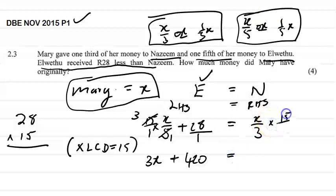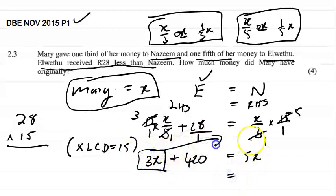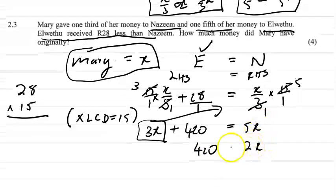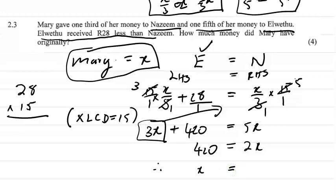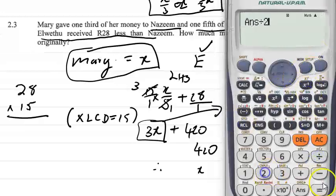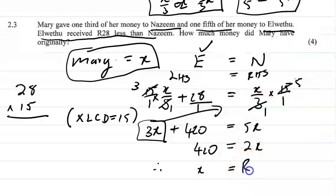Multiplying the right-hand side: 15 times x over three — three goes into 15 five times, giving 5x. So we have 3x plus 420 equals 5x. Taking 3x to the right-hand side: 5x minus 3x is 2x, equals 420. Dividing both sides by 2, x equals 210. We can conclude that Mary had 210 rand originally.